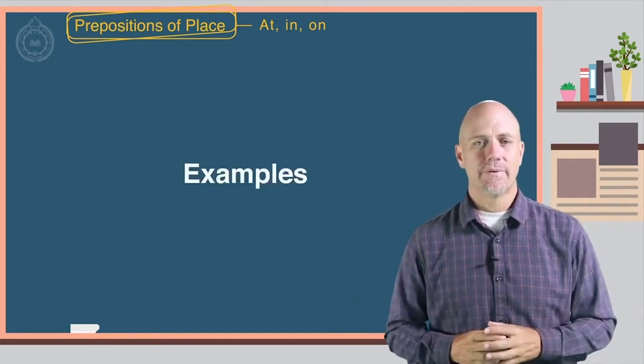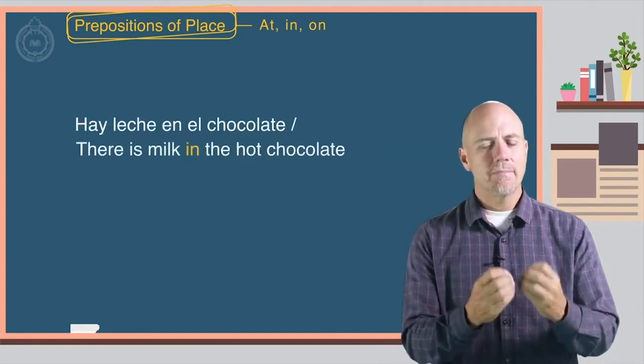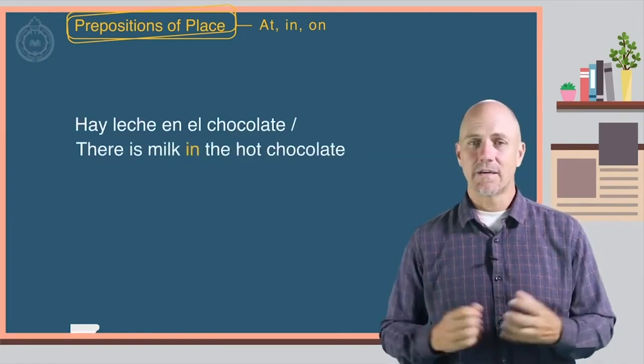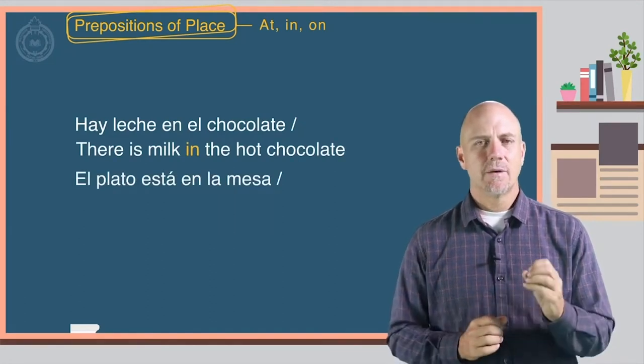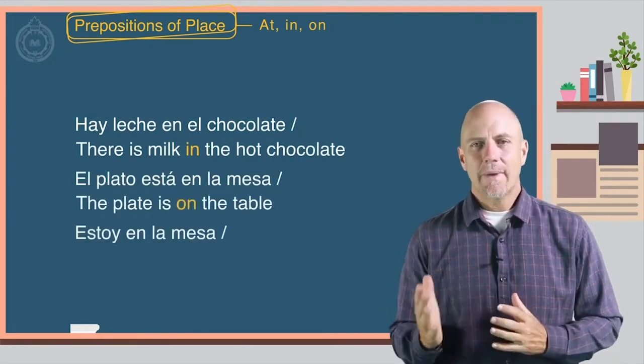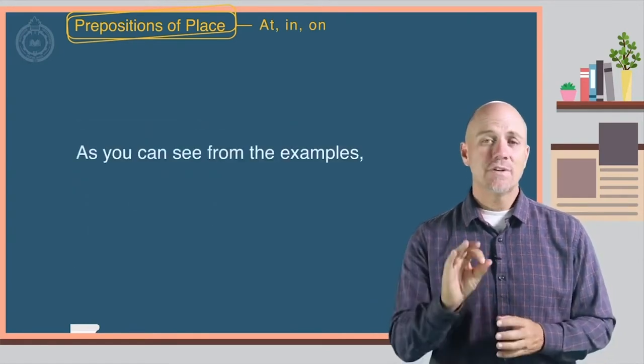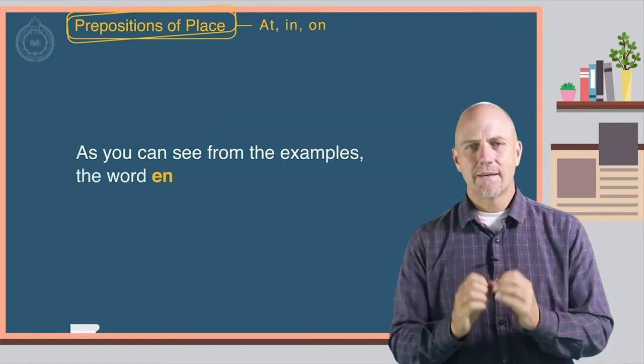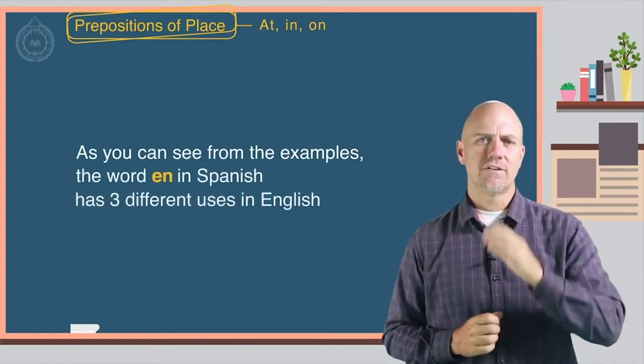Here are some examples. Hay leche en el chocolate - There is milk in the hot chocolate. El plato está en la mesa - The plate is on the table. Estoy en la mesa - I am at the table. As you can see from the examples, the word en in Spanish has three different uses in English.